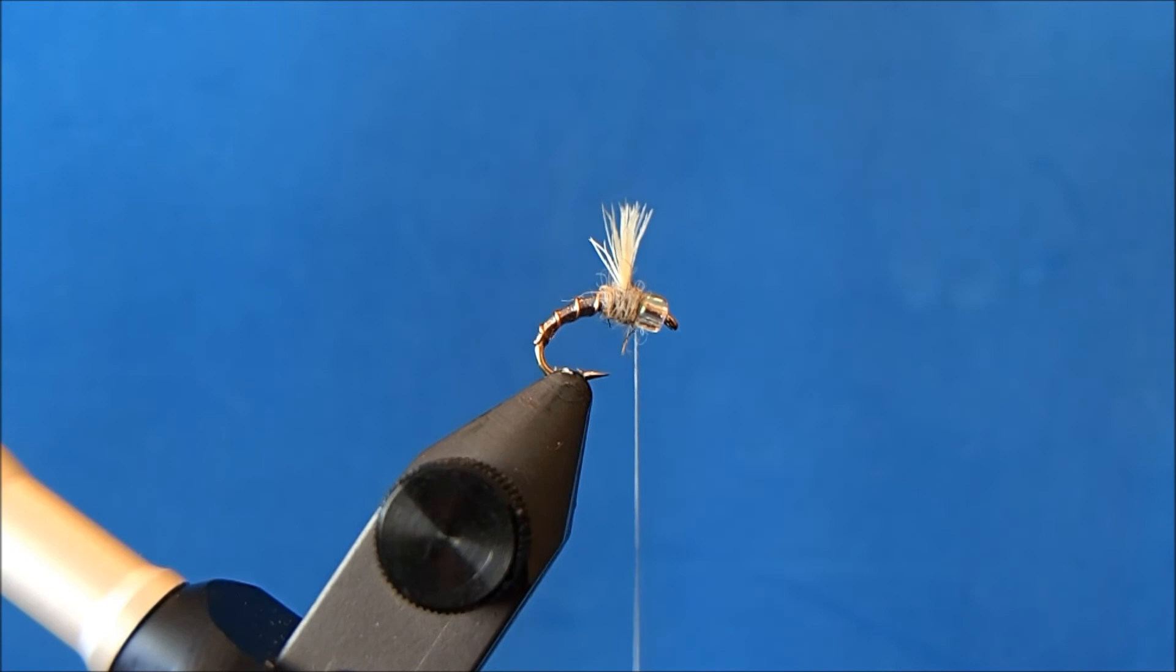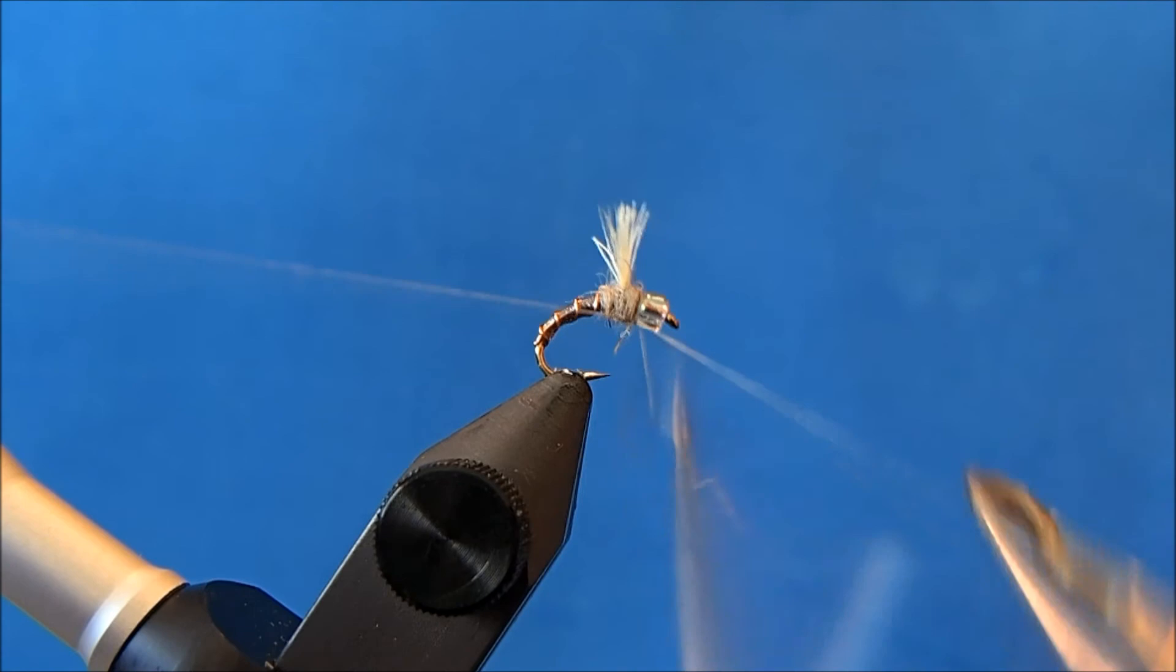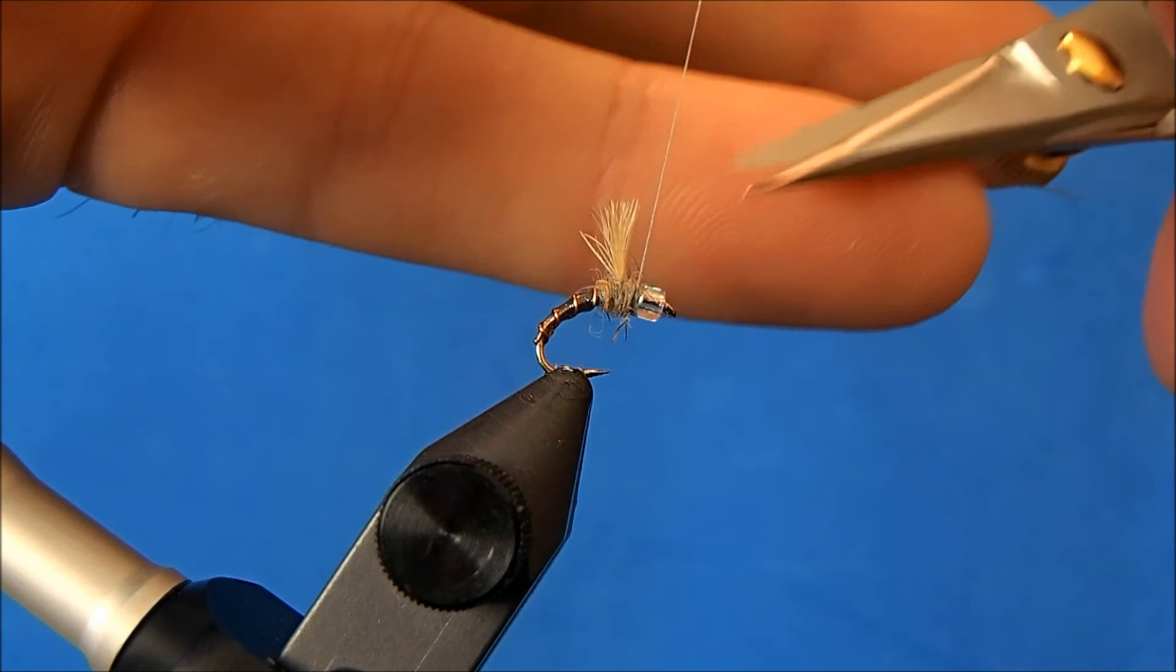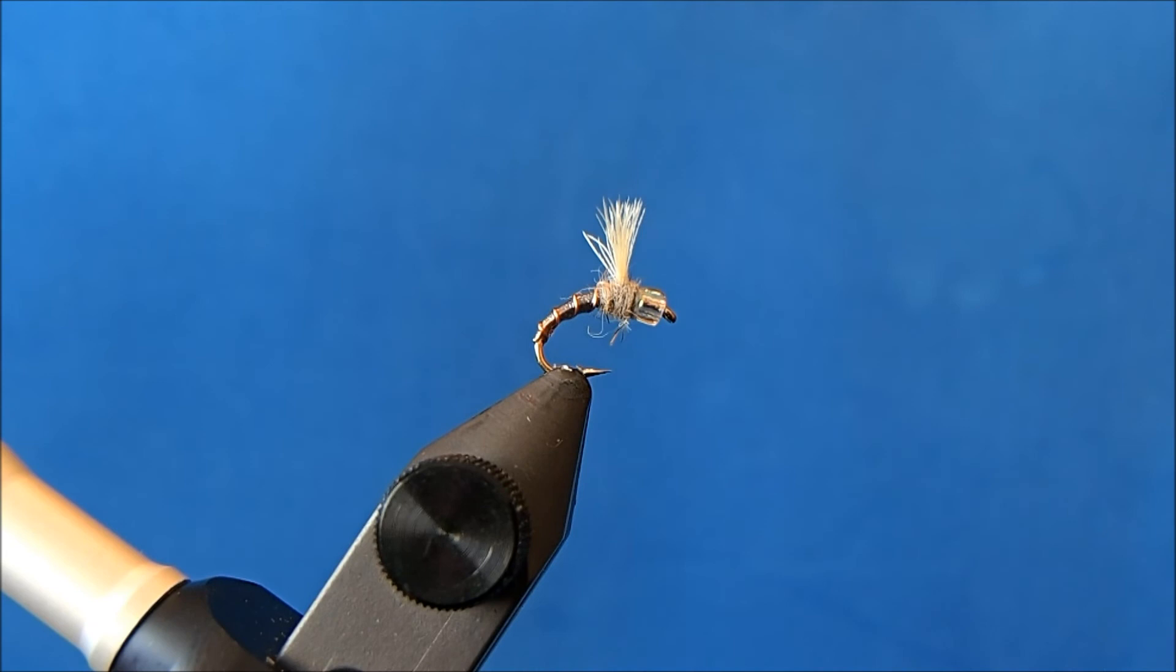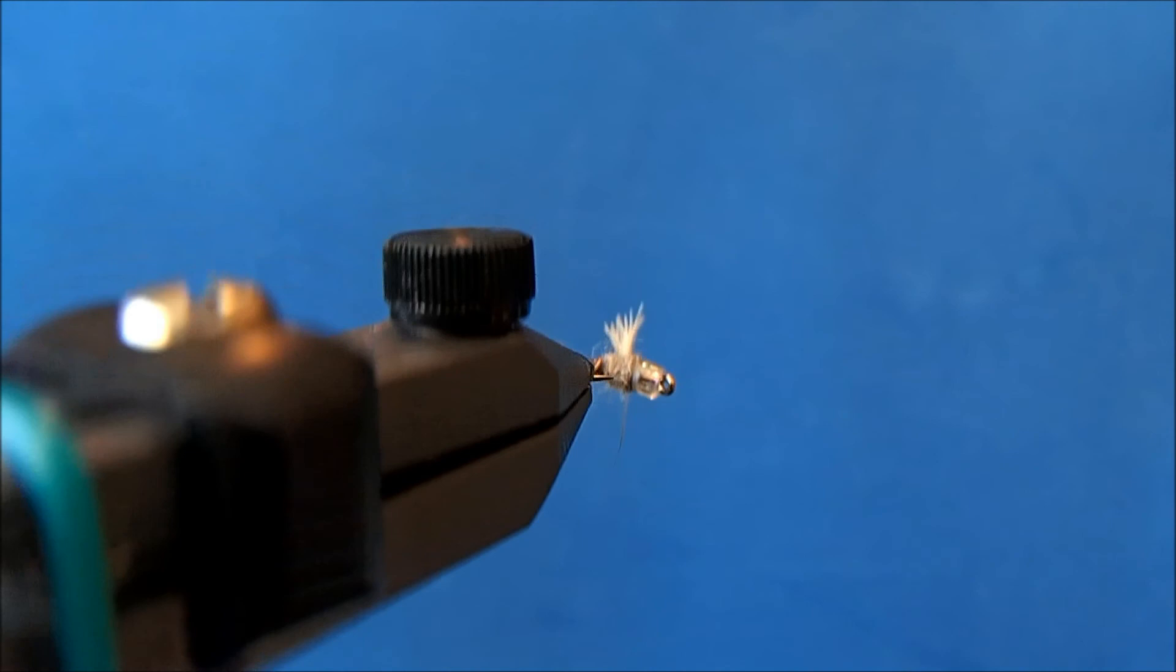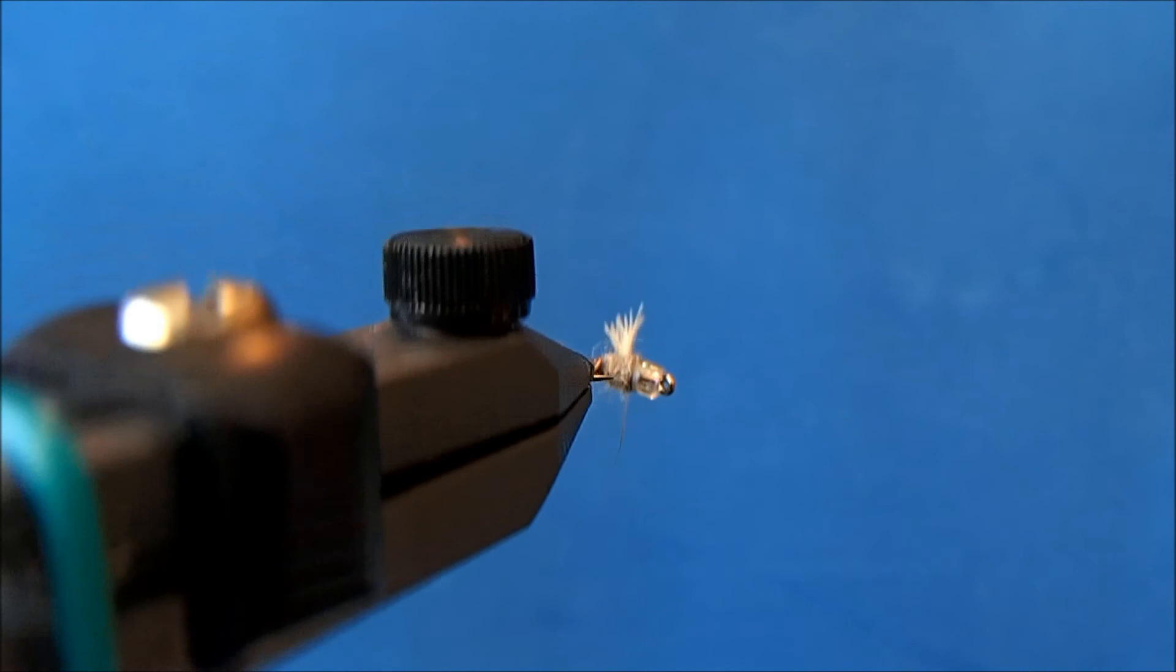And when you're happy with the thorax then just whip finish and remove the thread. And then that Sally Hansen should be set up by now. And that's it. That is my version of Spring Creek Midge.